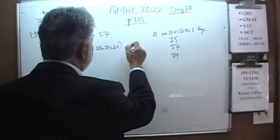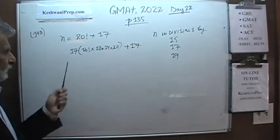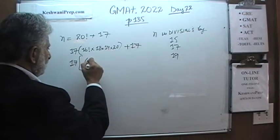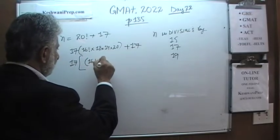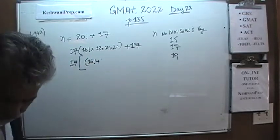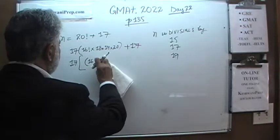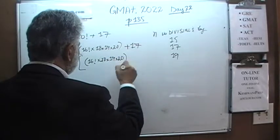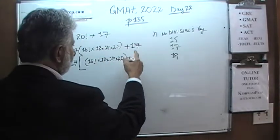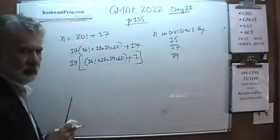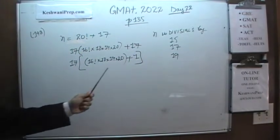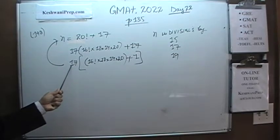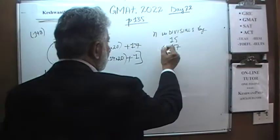So we took out the 17 common, leaving a 1 there, and of course we have a 17 here. Therefore we can take the 17 common out. 17 can be factored out, and what we're left with is 17 times the quantity (16 factorial times 18 times 19 times 20 plus 1). The point here is that this quantity, which is n, is a multiple of 17. Since it's a multiple of 17, this quantity is divisible by 17.